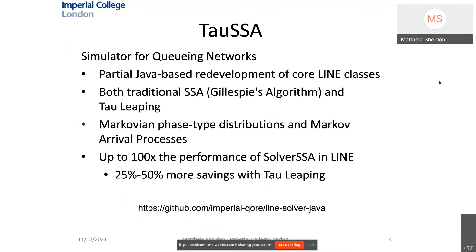One of these solvers is TauSSA, implemented in Java, and it includes partial redevelopment of several core LINE classes. It primarily simulates using the SSA algorithm known as Gillespie's algorithm as well as tau leaping. It currently only considers Markovian distributions such as exponential and Erlang, as well as Markovian arrival processes. In terms of performance, it can offer up to 100 times the performance of LINE's native SSA solver.